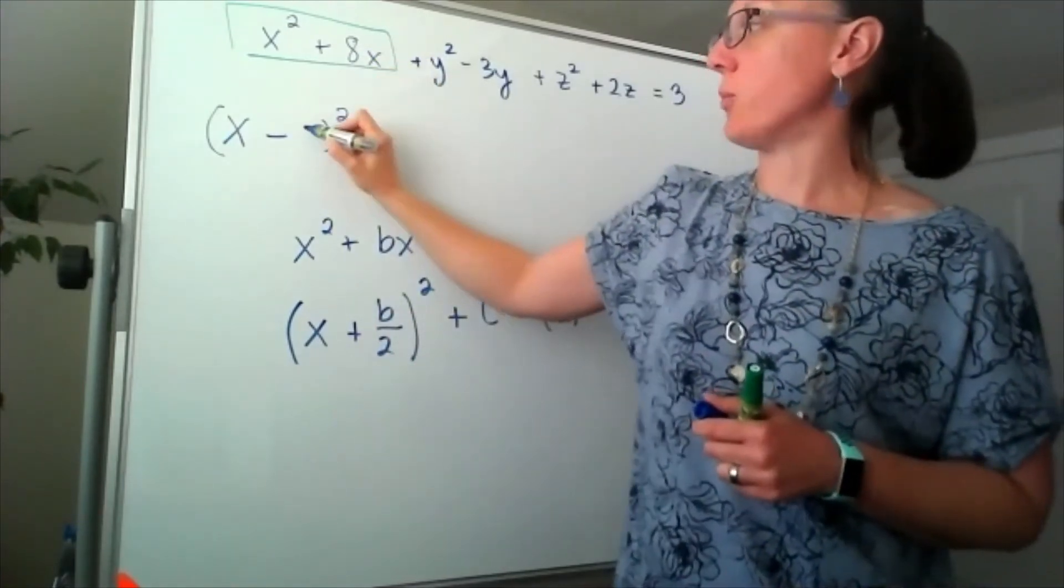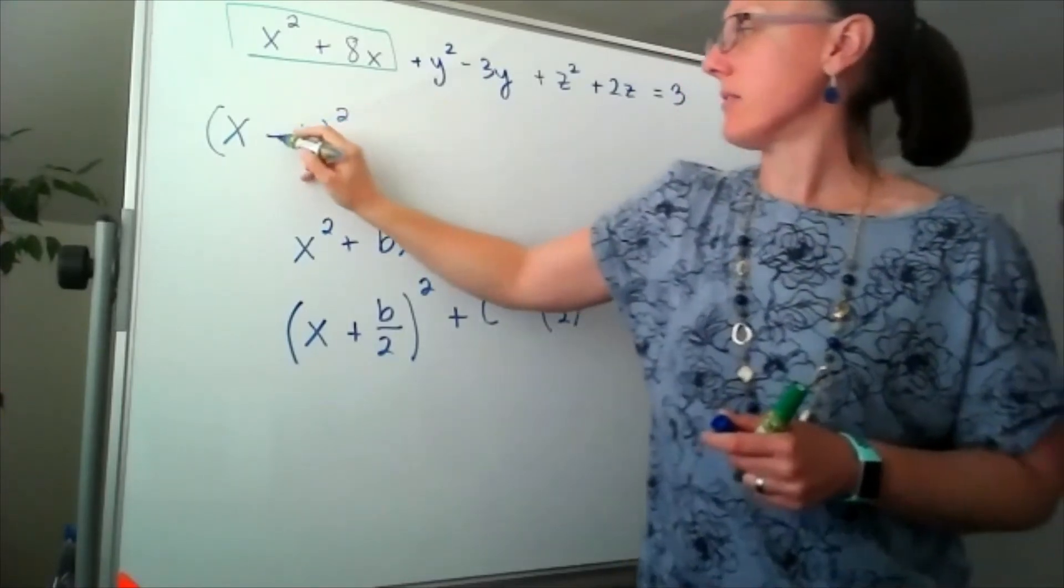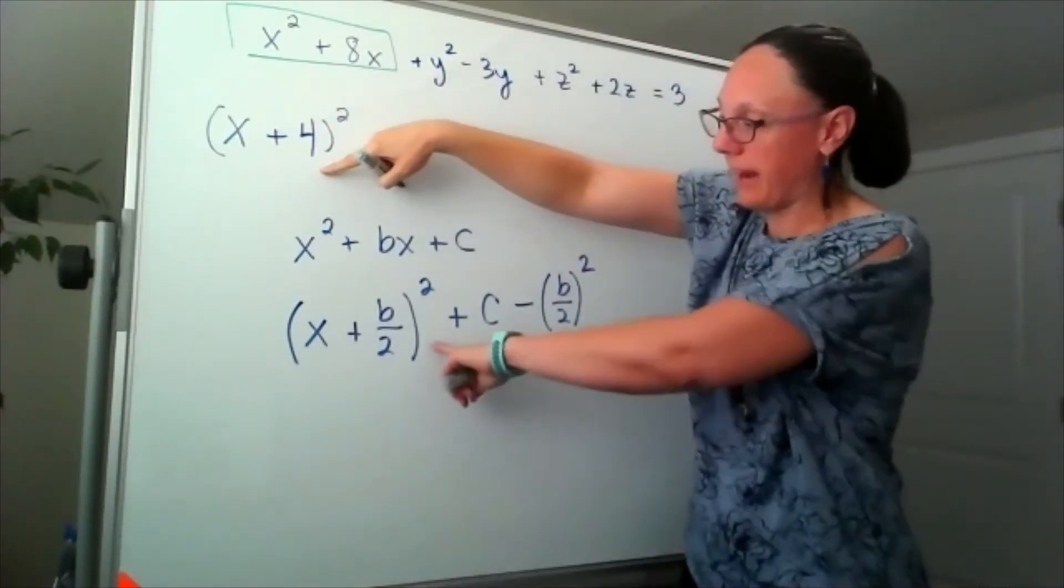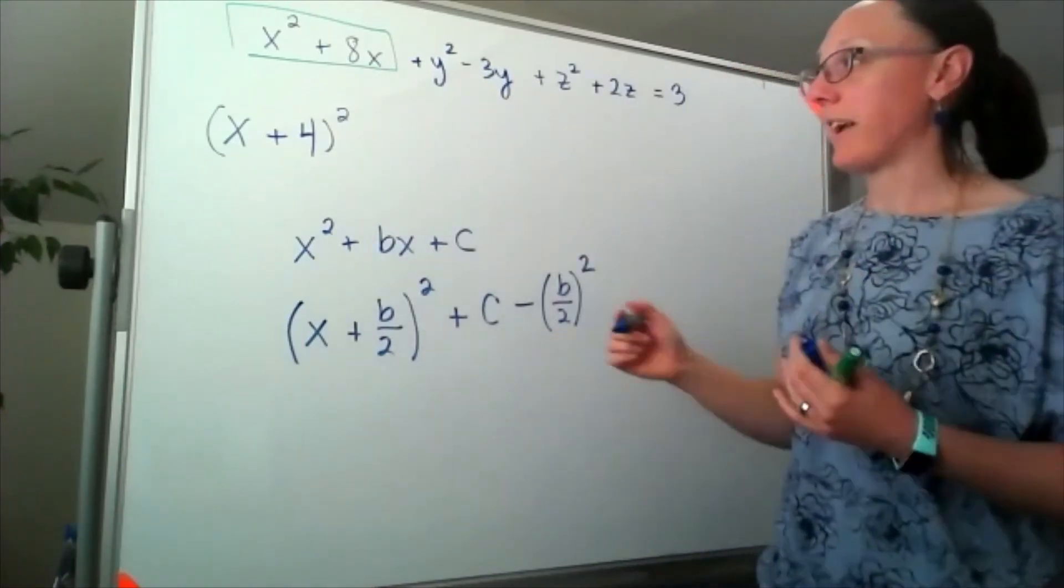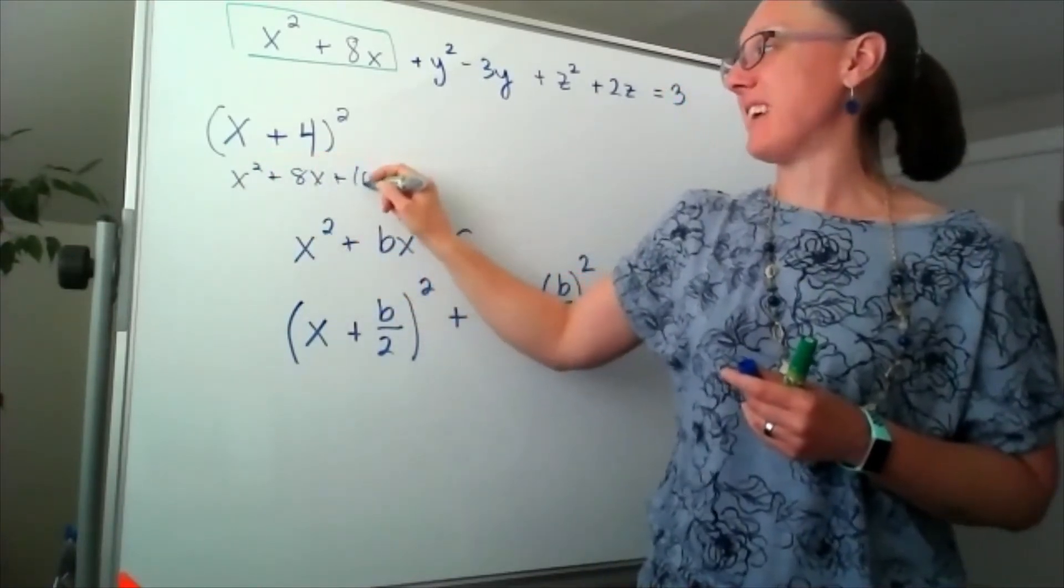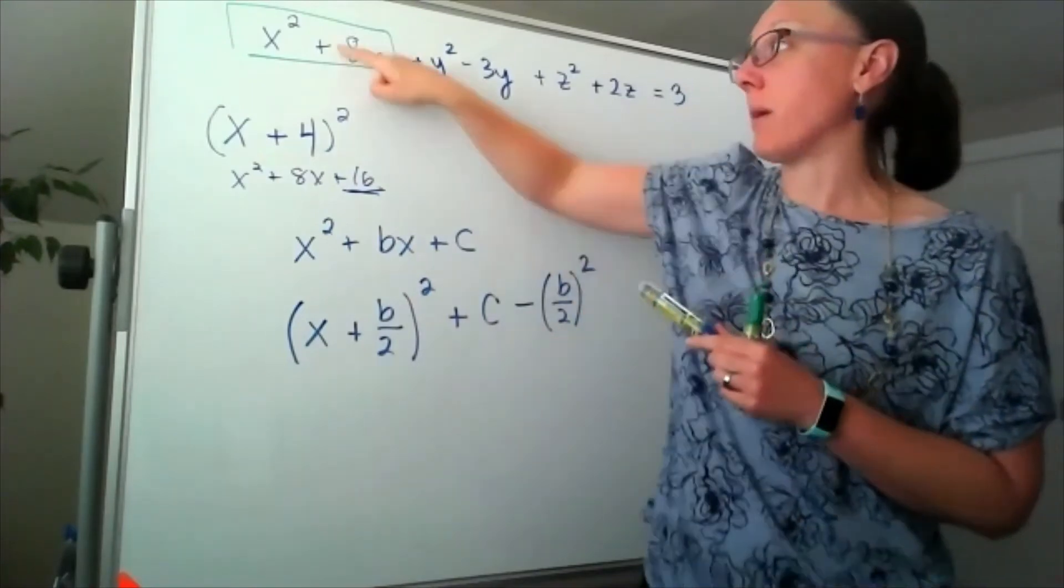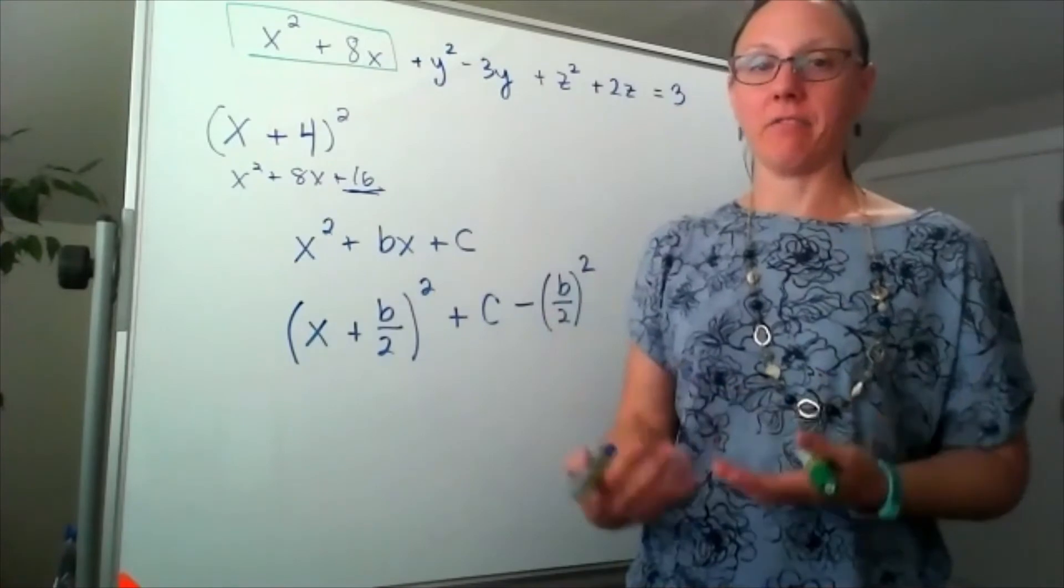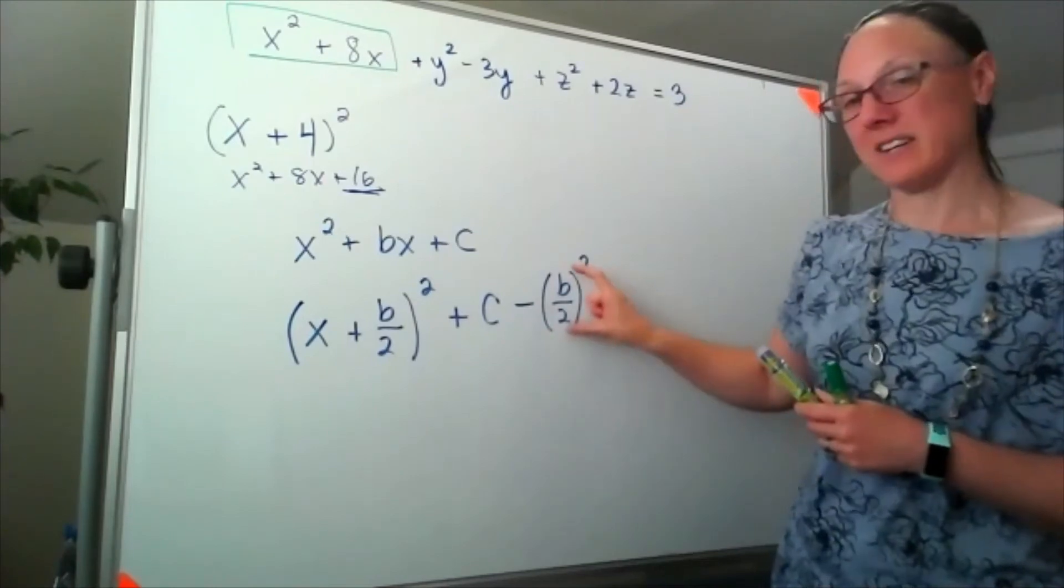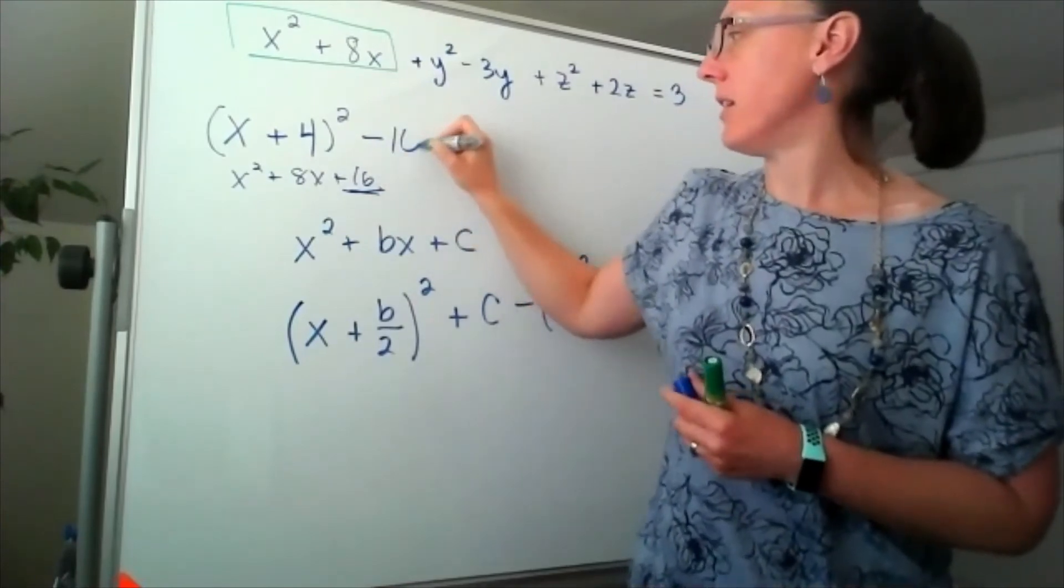So 8 over 2 would give me 4. So I'm going to have x plus 4. Then I know that in order to make this work out, if I had multiplied this out, I would get x squared plus 8x plus 16. But I didn't have that 16 to start with. So essentially, by writing this in this way, I've added an invisible 16. And I now need to subtract it back off. And that's where this minus b over 2 quantity squared piece comes in. So I'm going to subtract off 16.